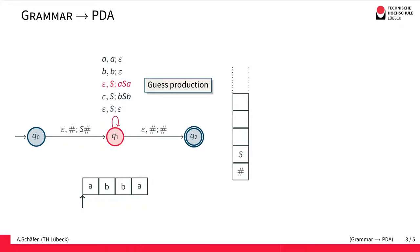Now that we have the start symbol on the stack, we have to guess a production, the production that we would actually use for deriving the word. And as the first production rule, we would simply replace the S by ASA.